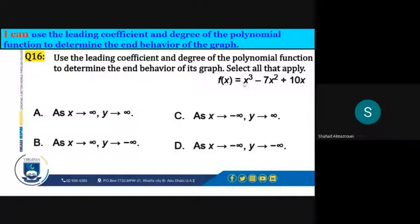And the leading term is positive. So when x is positive, the y will be positive. So it's A, which is: as x approaches positive infinity, y approaches positive infinity.